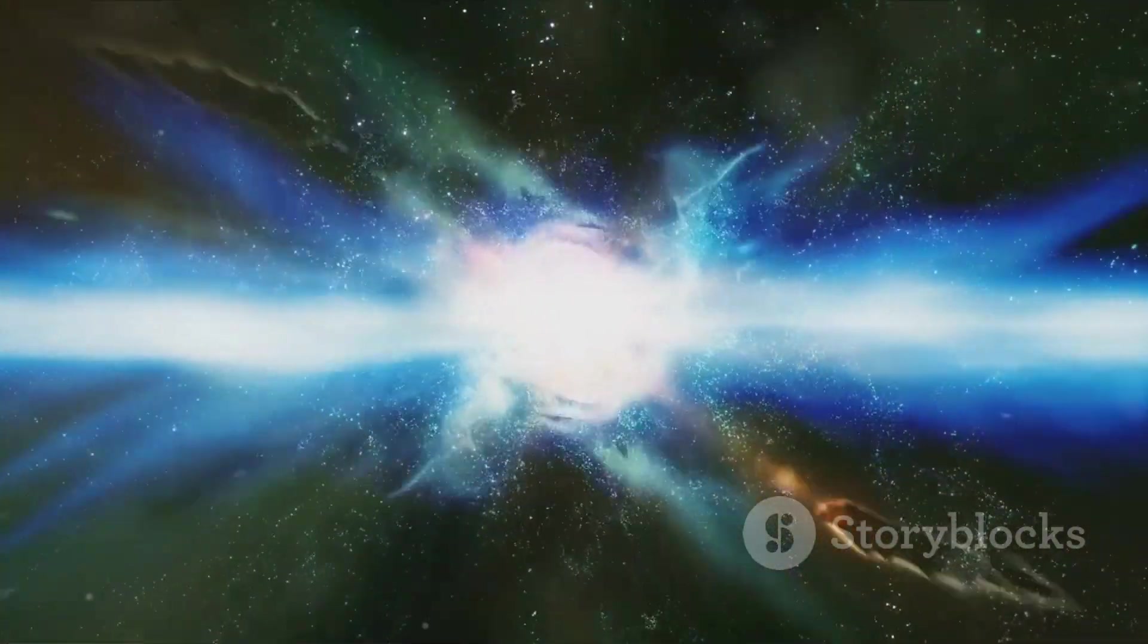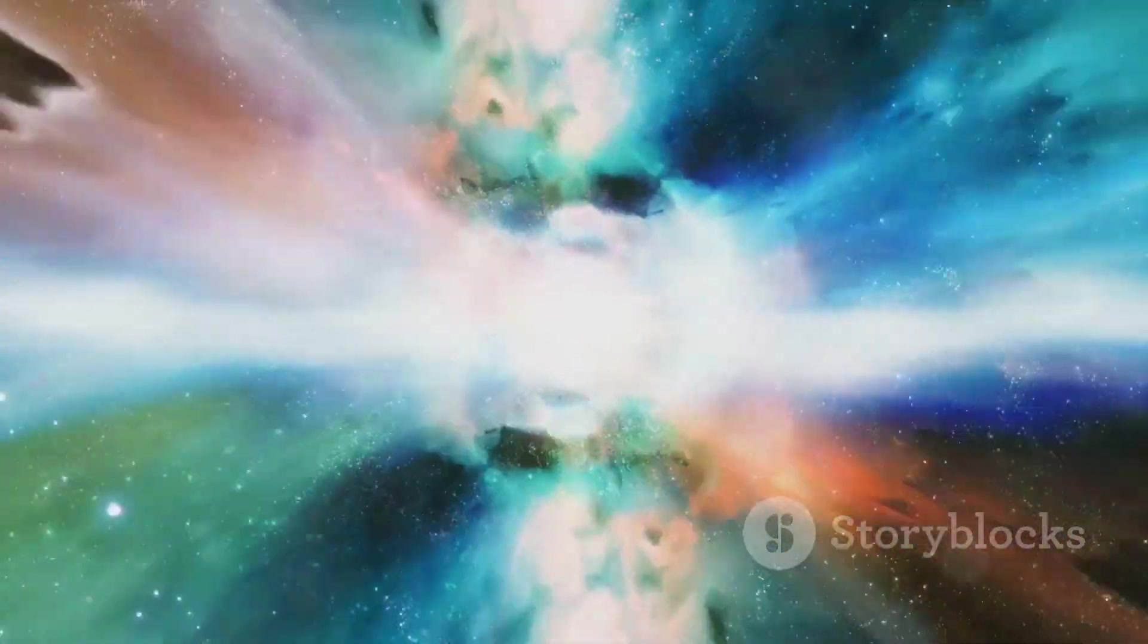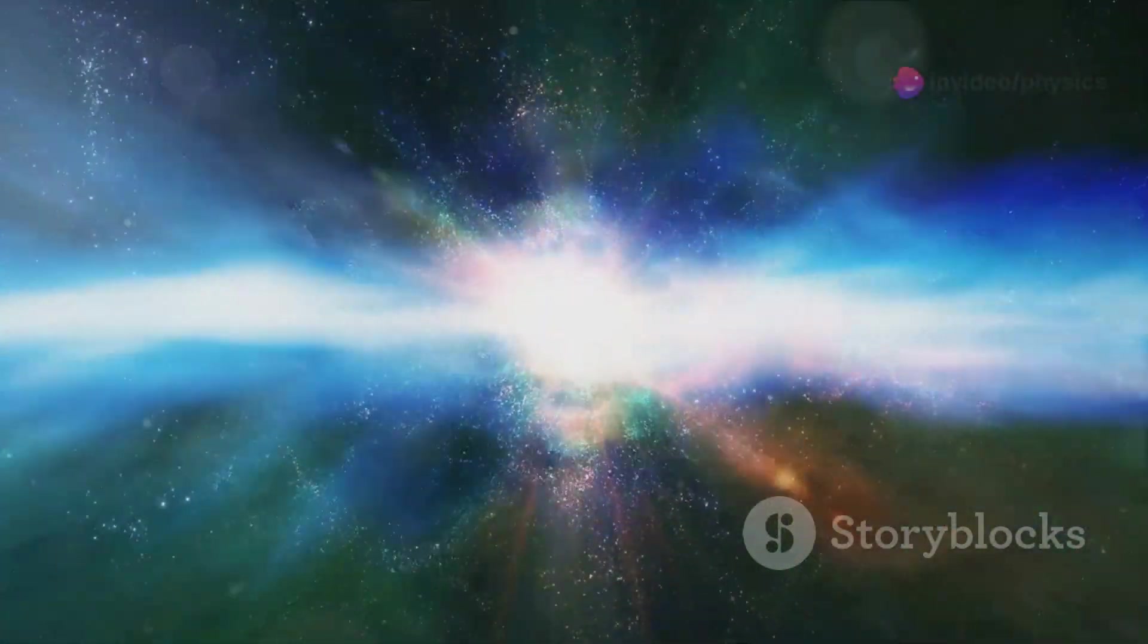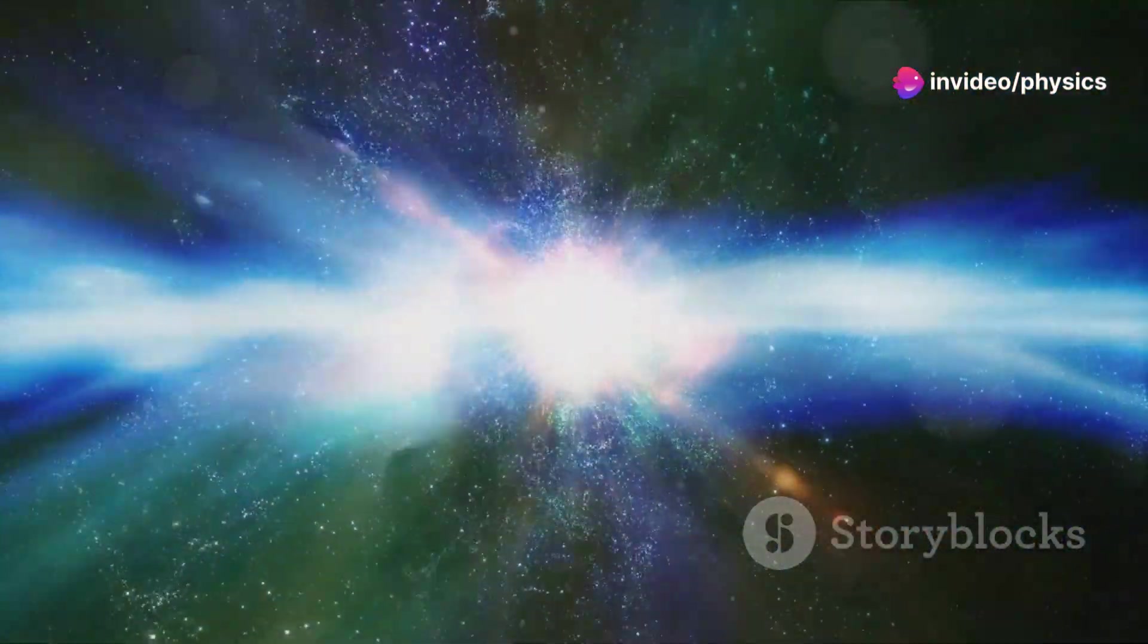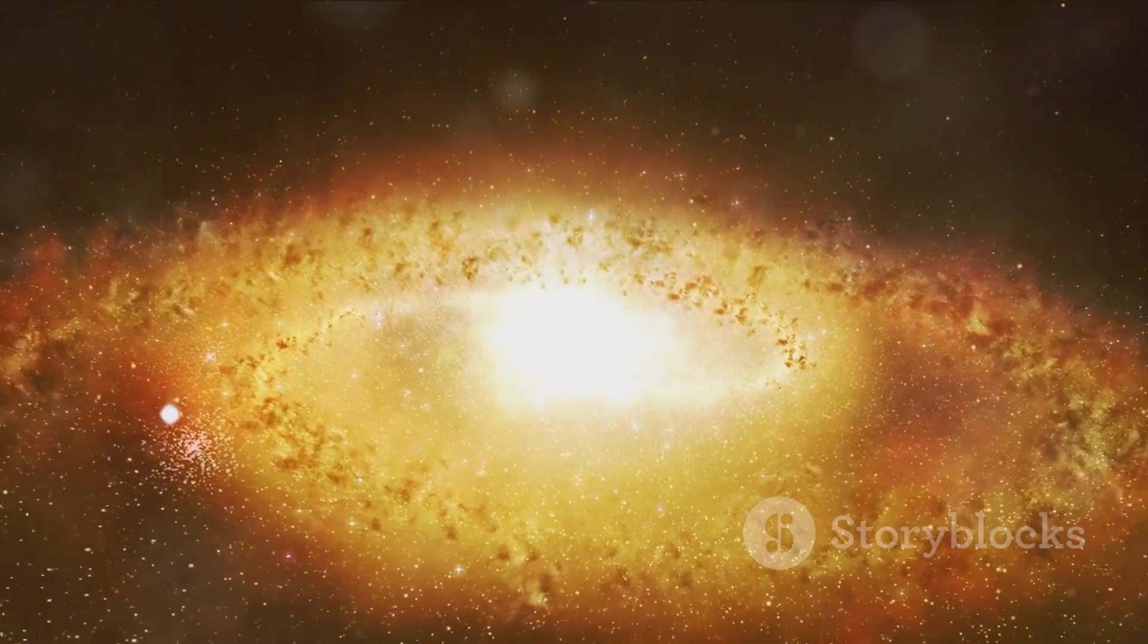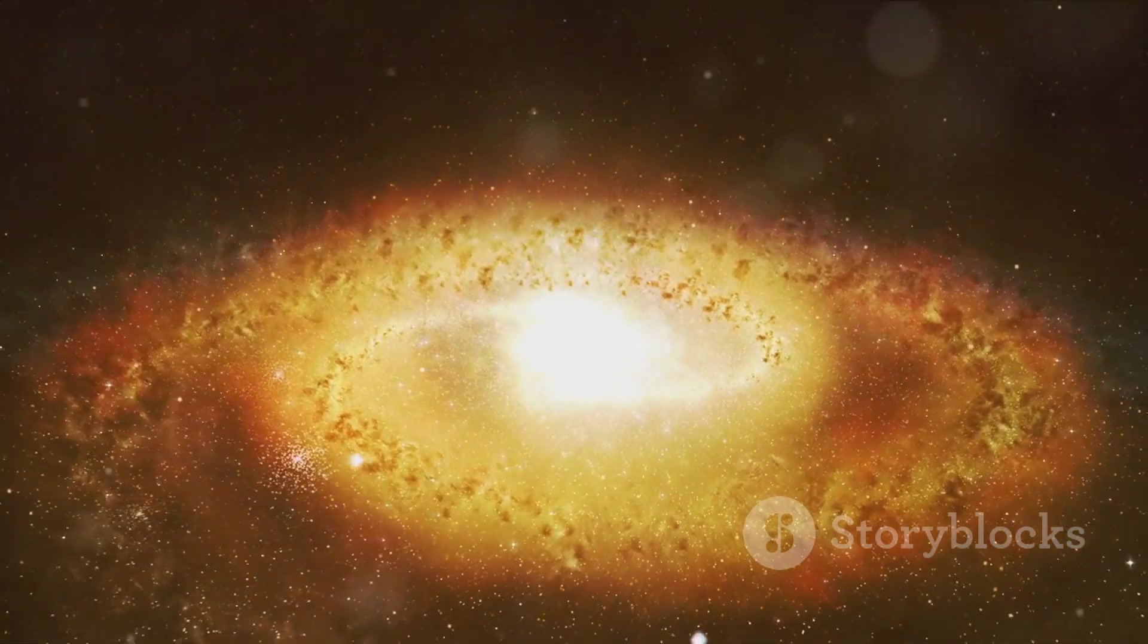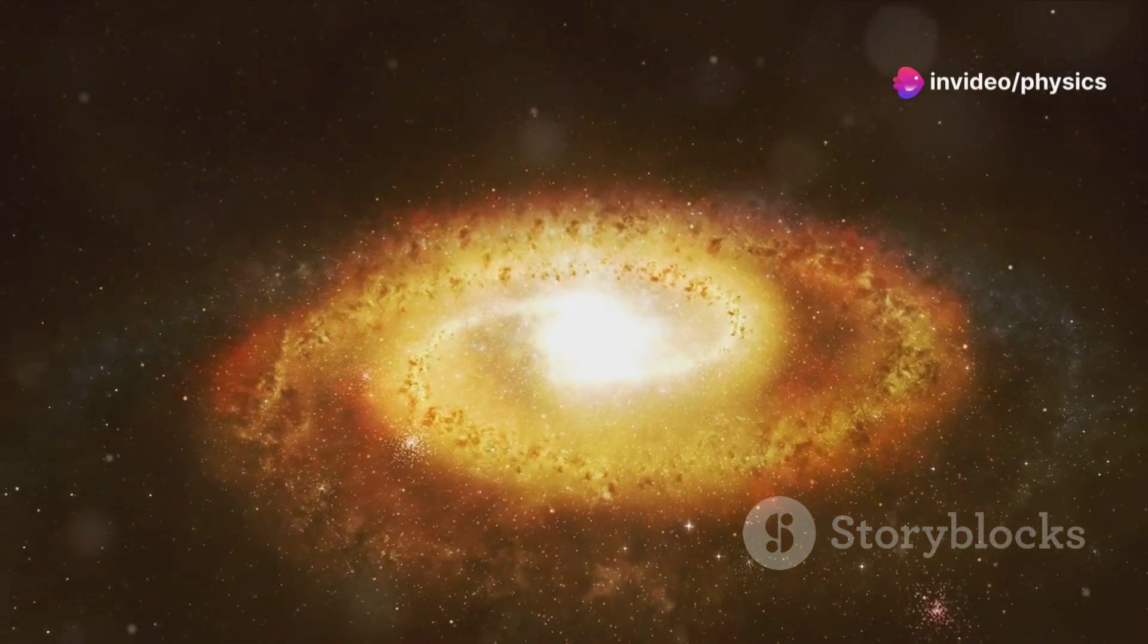Following the merger, the newly formed black hole would likely experience a period of adjustment, characterized by the emission of jets and radiation as it settles into its new state. This aftermath could see the birth of a new galaxy structure around this remnant black hole, formed from the remnants of Phoenix A and possibly other material drawn into the cataclysmic gravitational whirlpool.